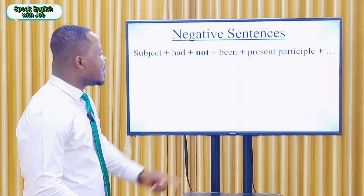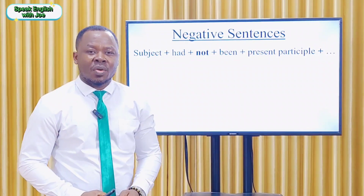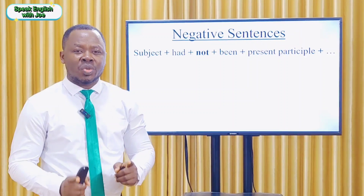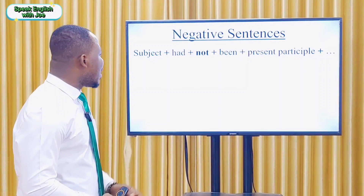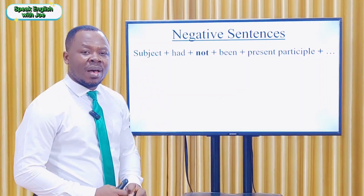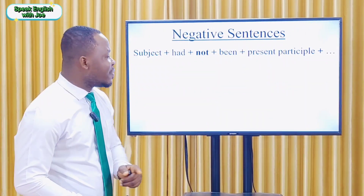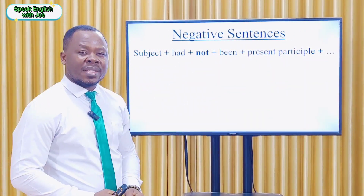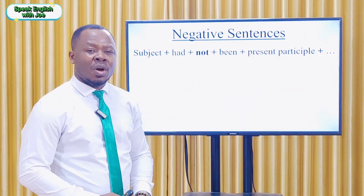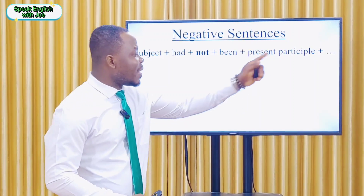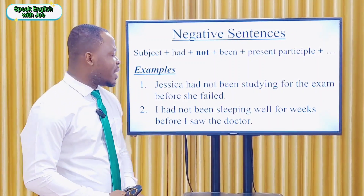To make negative sentences with the past perfect continuous tense, we put 'not' between the two helping verbs. The form looks like: subject (I, you, we, they, he, she, it) plus the first helping verb 'had', plus 'not', plus the second helping verb 'been', plus the present participle (main verb plus -ing), and plus the rest of the sentence.